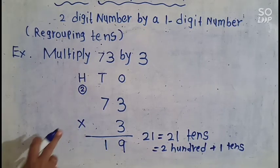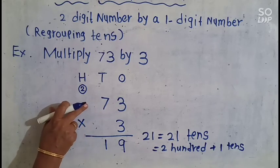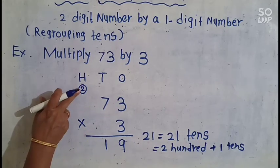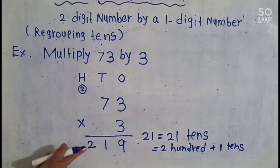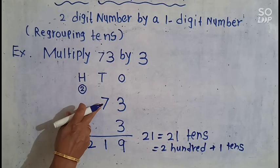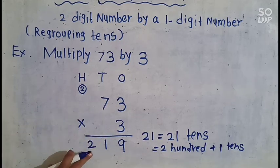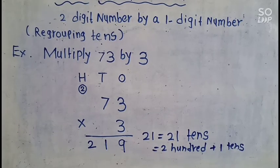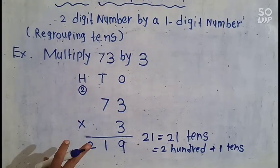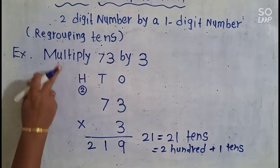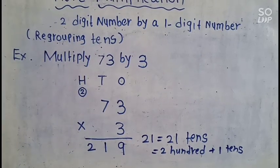This is 200, but there is no number left for multiplication, so this 2 comes down here in the 100s place. The answer is 73 × 3 = 219. I hope you have understood 2-digit number by a 1-digit number with regrouping 1s and regrouping 10s. Thank you.